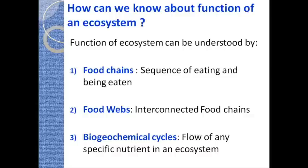The third way is to study biogeochemical cycles in an ecosystem. Biogeochemical cycles means the study of the flow of any particular nutrient in an ecosystem. For example, if I am interested to know how carbon moves in a particular ecosystem, I will assess the amount of carbon at the producer level, then at the herbivore level, then at the carnivore level. Similarly, other nutrients can also be studied. When we specifically study the flow or movement of any particular nutrient in an ecosystem it is known as the biogeochemical cycle of that nutrient, and by studying it we can understand the functional aspect of any ecosystem.